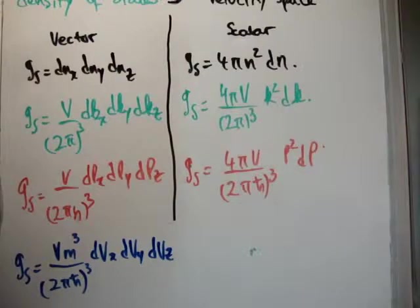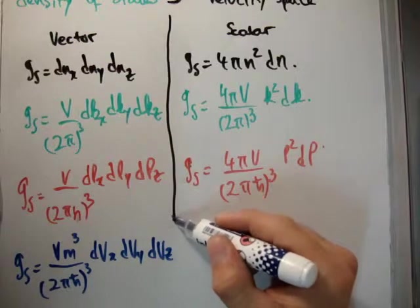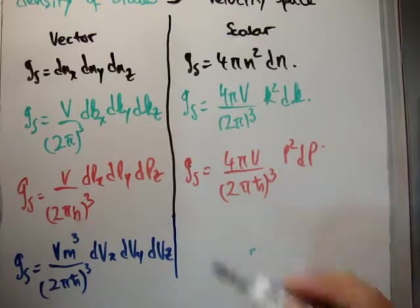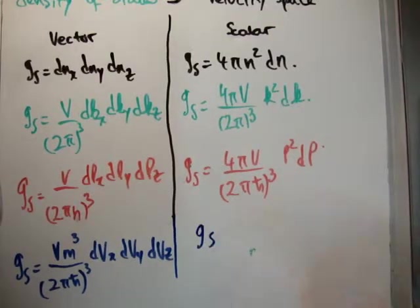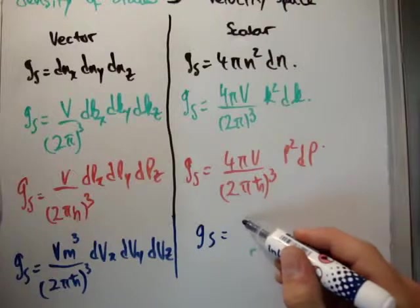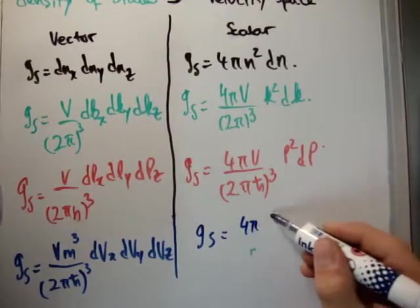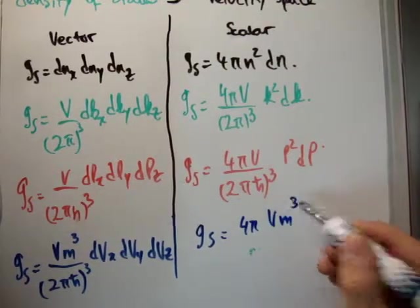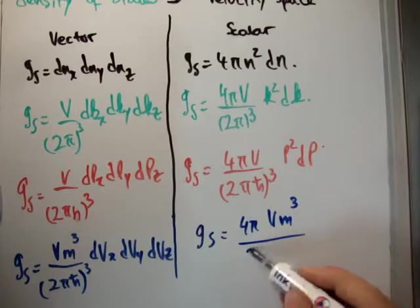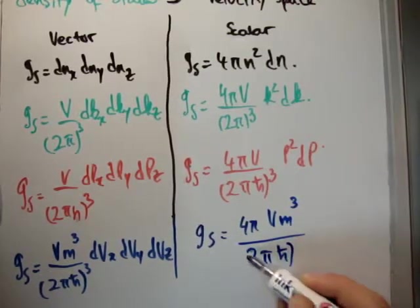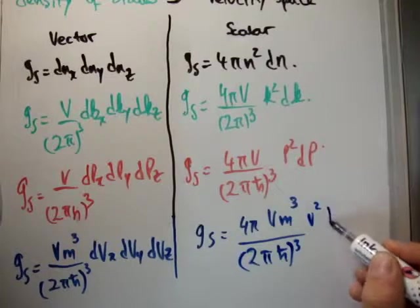So that is the density of states in vector velocity space. So in order to get it in scalar space then, we do the same thing over here. And we get g sub s is equal to 4 pi vm cubed, divided by 2 pi h bar, to be cubed, v squared, dv.